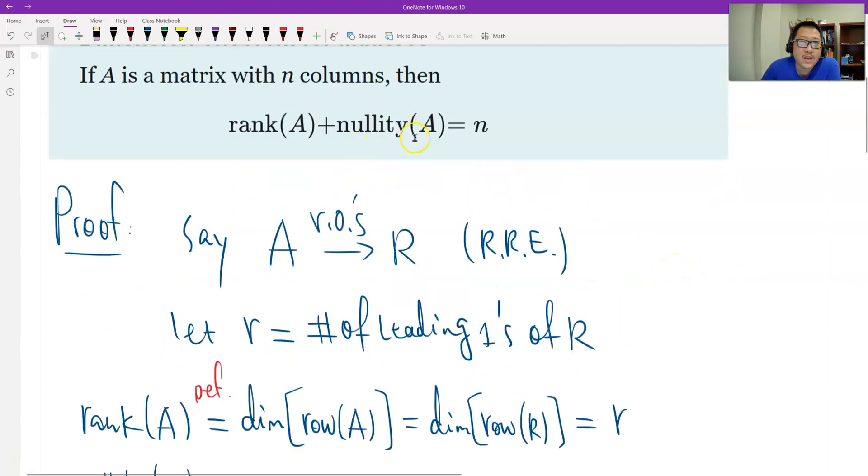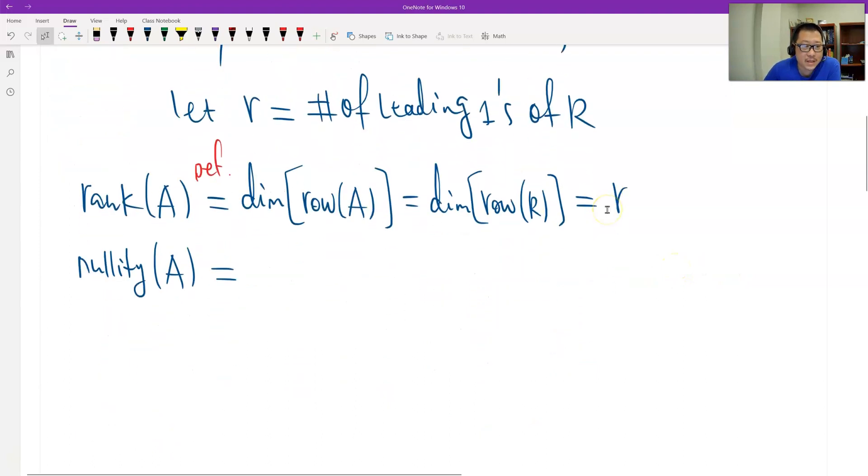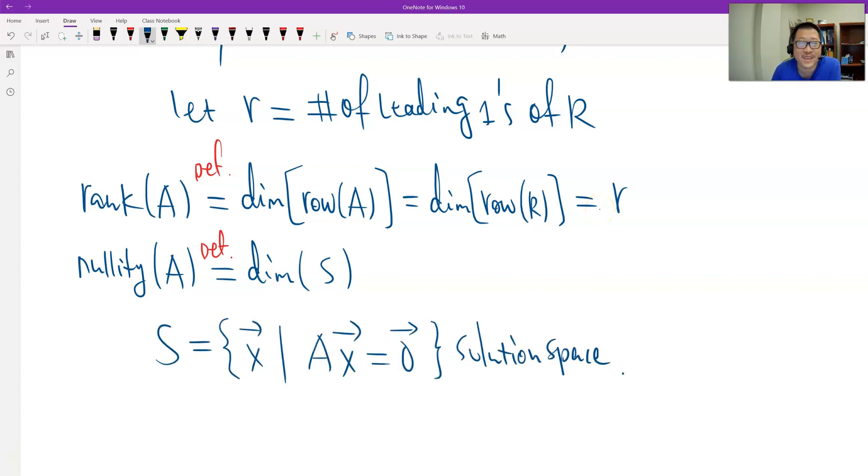Now, what's the nullity? What's the nullity defined? The nullity means the dimension of the solution space of A equals zero. What is S? Let's say S is just the solution space. So we call it solution space of the homogeneous linear system.